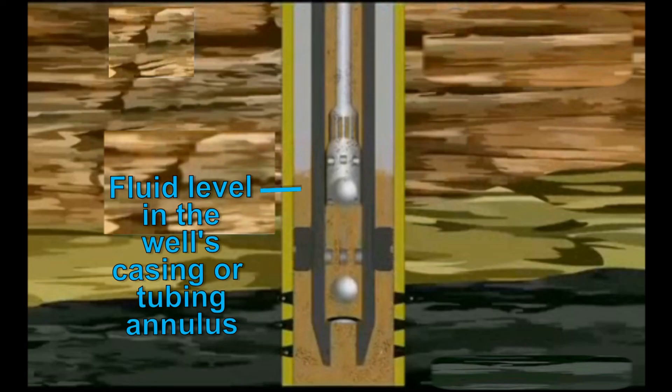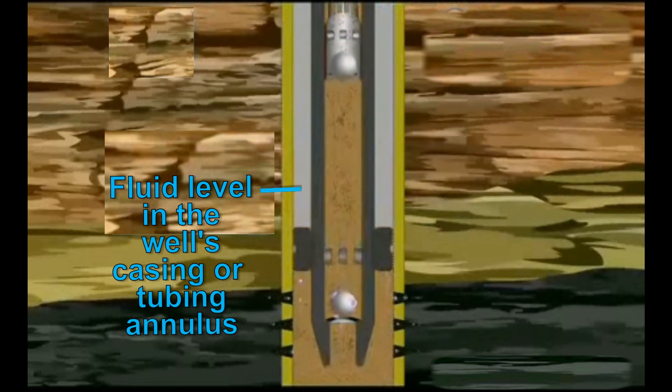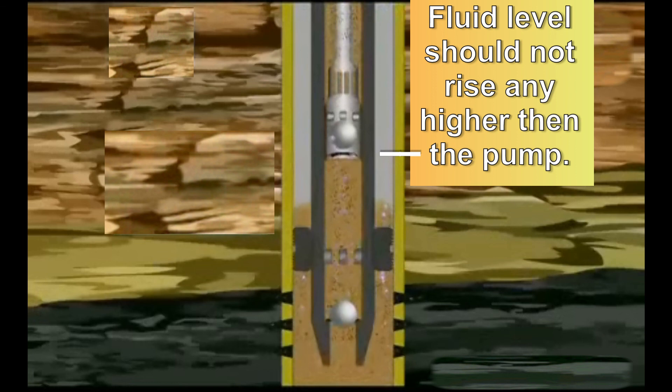Let's go back to look at a sucker rod pump as it captures fluid from a reservoir. As already stated, this reservoir fluid that enters the barrel when the standing valve is open should be roughly equivalent to the amount that is pumped upward through the traveling valve during an upstroke. In optimal conditions, the pumping system will lift all that oil that enters from the wellbore into the barrel of the pump when the standing valve is open. As a rule of thumb, the fluid level in the well's casing tubing annulus at the wellbore should not rise any higher than at or near the pump.